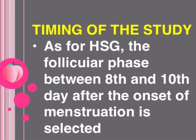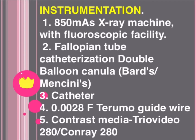Instrumentation: one, 850 mA X-ray machine with fluoroscopic facility; two, fallopian tube catheterization double balloon cannula — Guard or Mancini's; three, catheter; four, 0.028 inch guide wire; five, contrast media — Triovist 280.